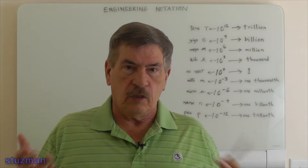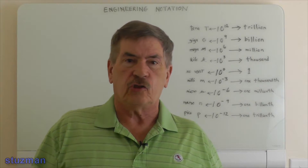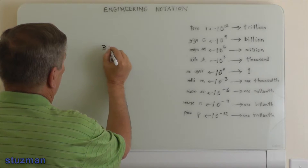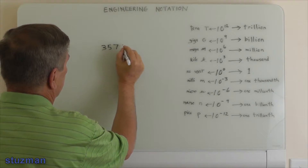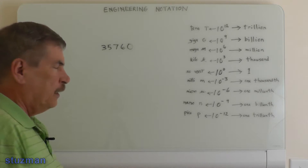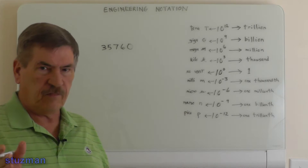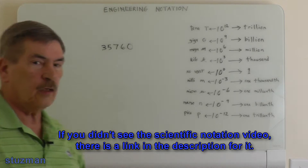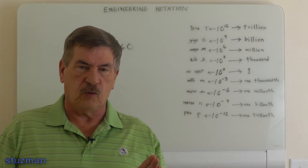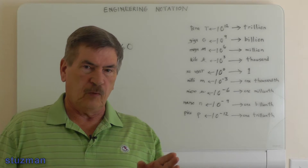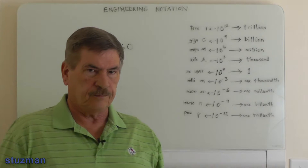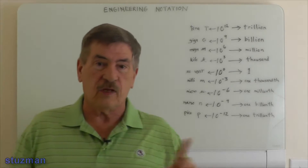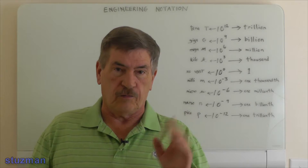The best way to do it is to just jump in and write a number down. We're going to write down 35,760. Now if you remember from scientific notation, a decimal point is here. We move it over until we get one digit to the left of the decimal point. That number will be one through nine, not including zero. And then we keep track of the number of places we move the decimal point, and that will be the exponent.